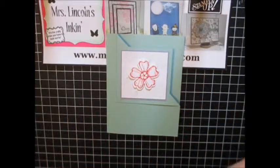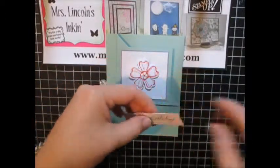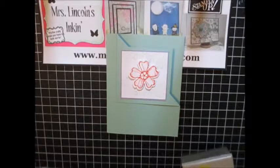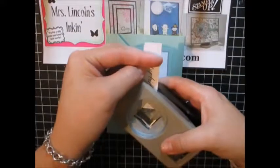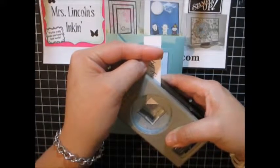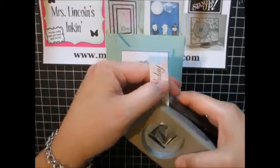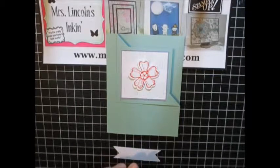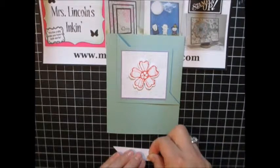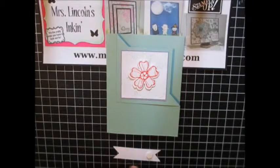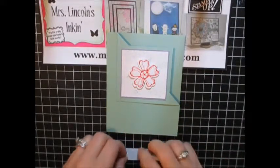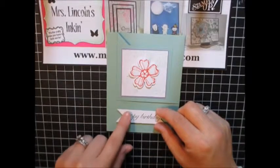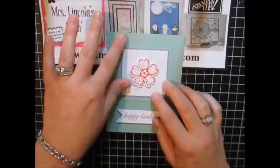All right, so now for my greeting. I already went ahead and stamped the Happy Birthday on a piece of Whisper White. And I don't know what size this is. It's about 3⁄4 by 3. And I'm just going to take my square punch and flag the edges. Just like that. Take another couple dimensionals. Put those on the back here. And then I'm just going to put this right down here at the bottom. Perfect.